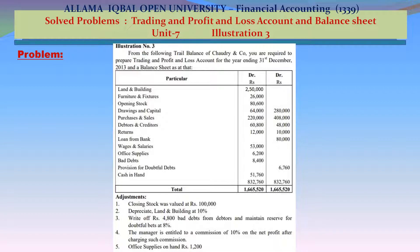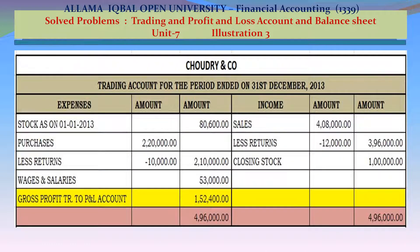Total Debits 832,760; Total Credits 832,760. Adjustments: 1. Closing stock was valued at 100,000. 2. Depreciate Land & Buildings at 10%. 3. Write off 4,800 bad debts from debtors and maintain reserve for doubtful debts at 8%. The manager is entitled to a commission of 10% on the net profit after charging such commission. Office supplies on hand: 1,200.